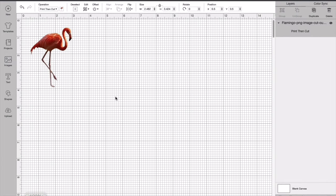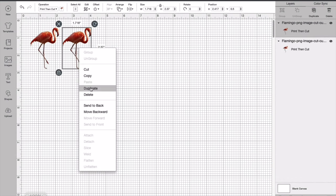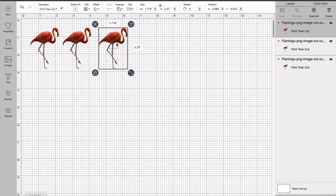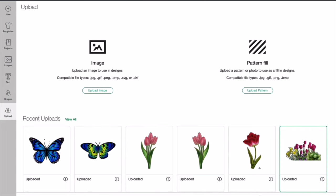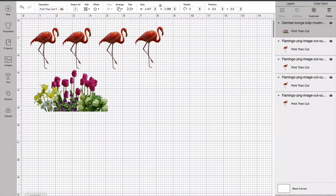Next, individually we will add these images to the canvas and drag them to the desired size. I am duplicating the image by clicking the right side of the touchpad or your mouse. Add the other photos by clicking the upload icon here. Uploading this cluster of tulips image and resizing it.